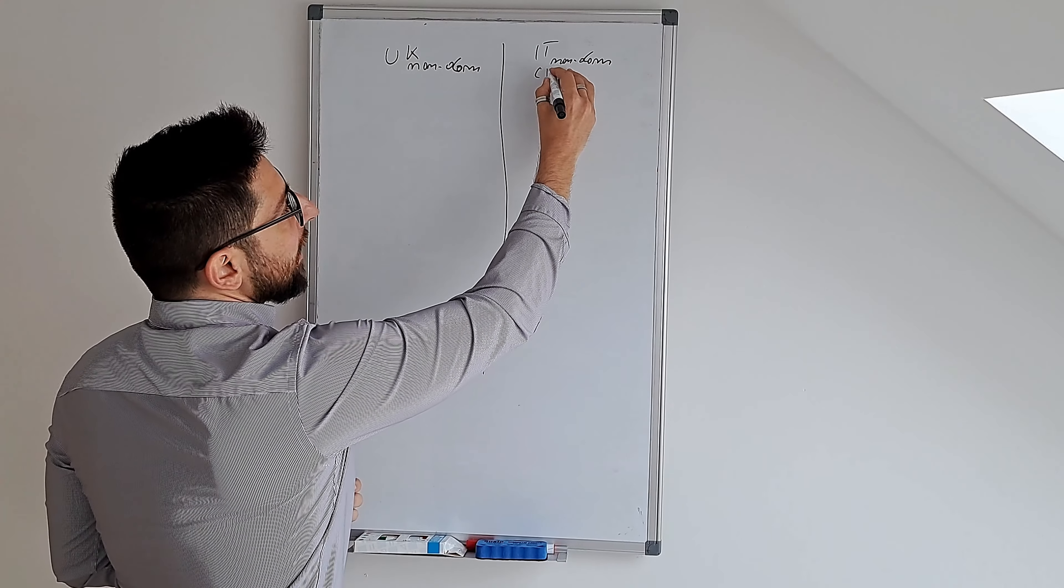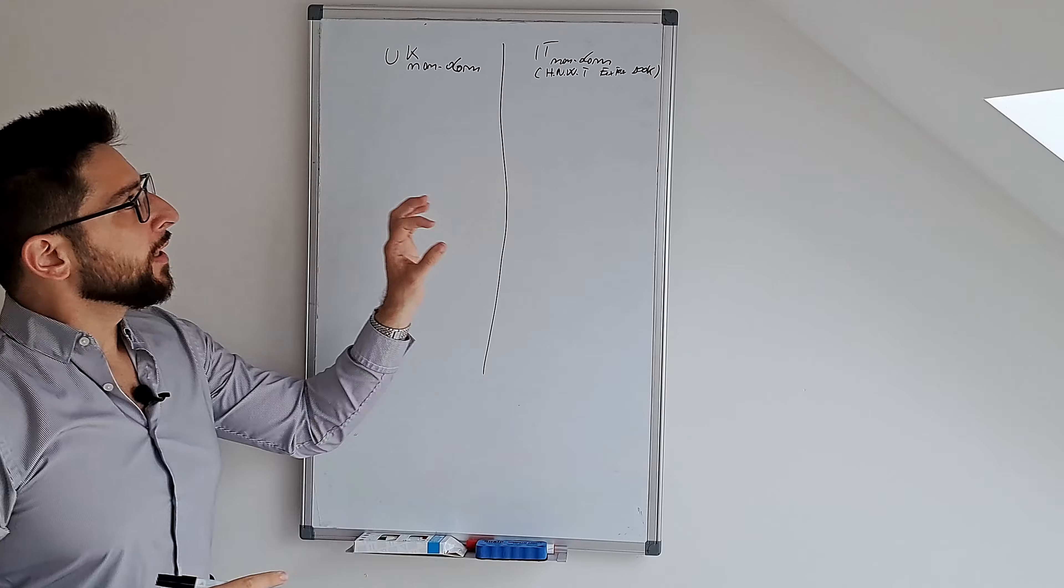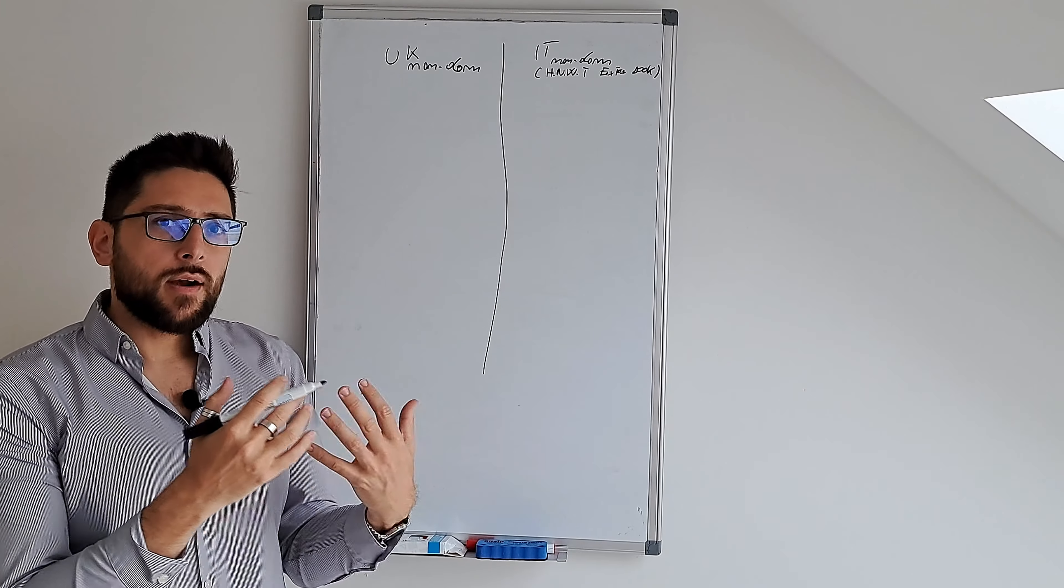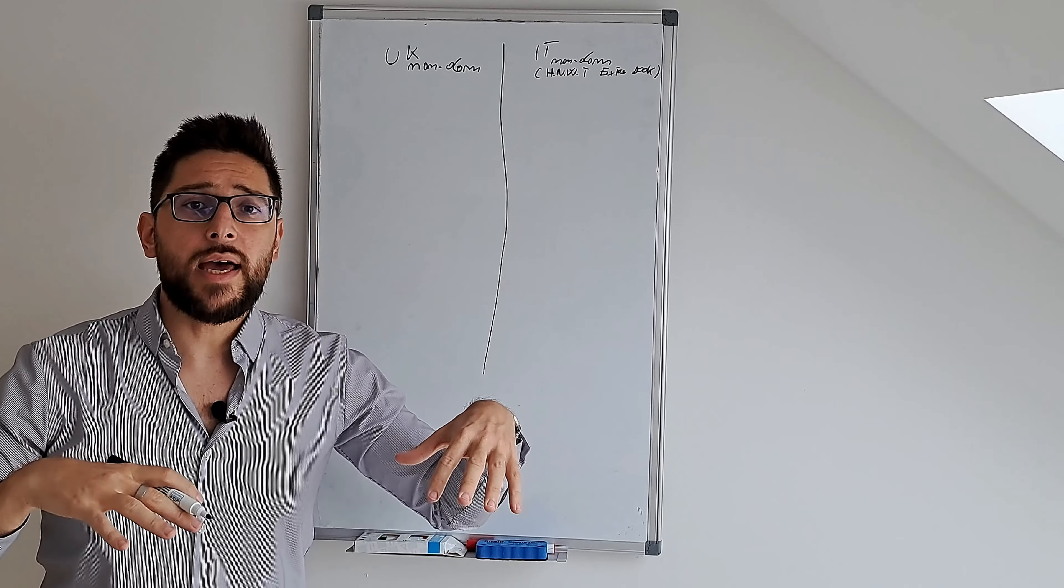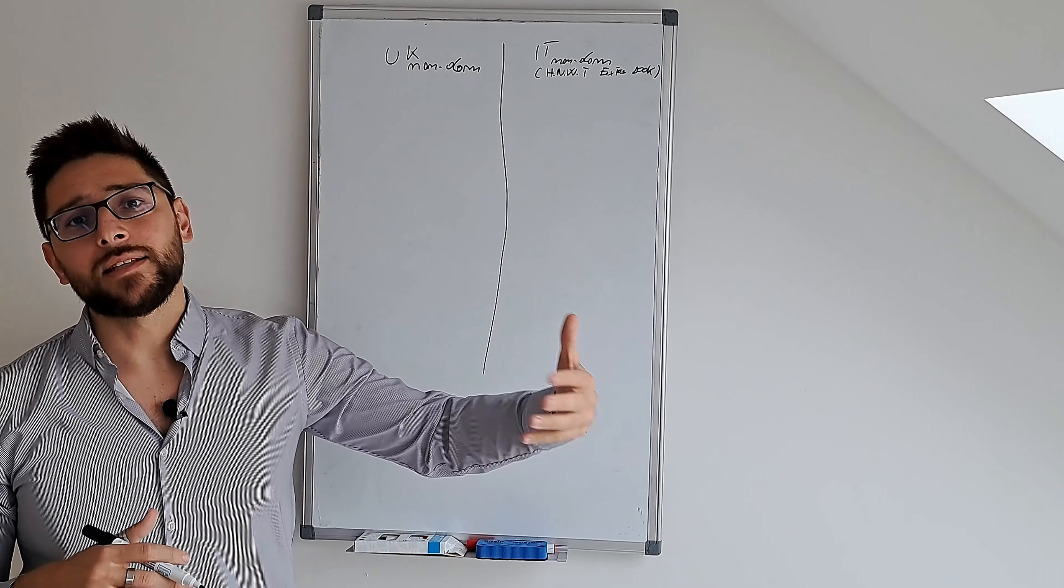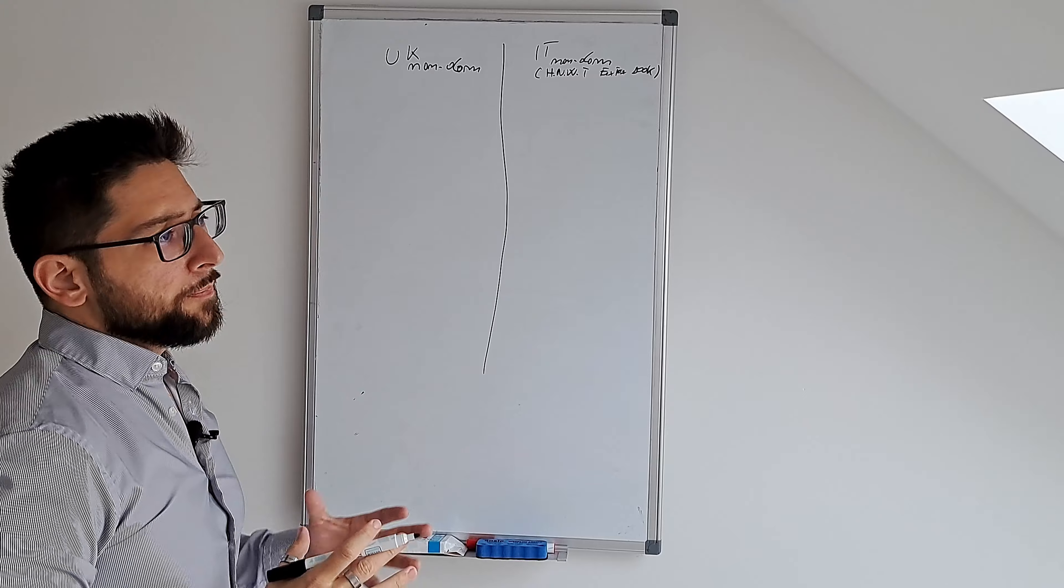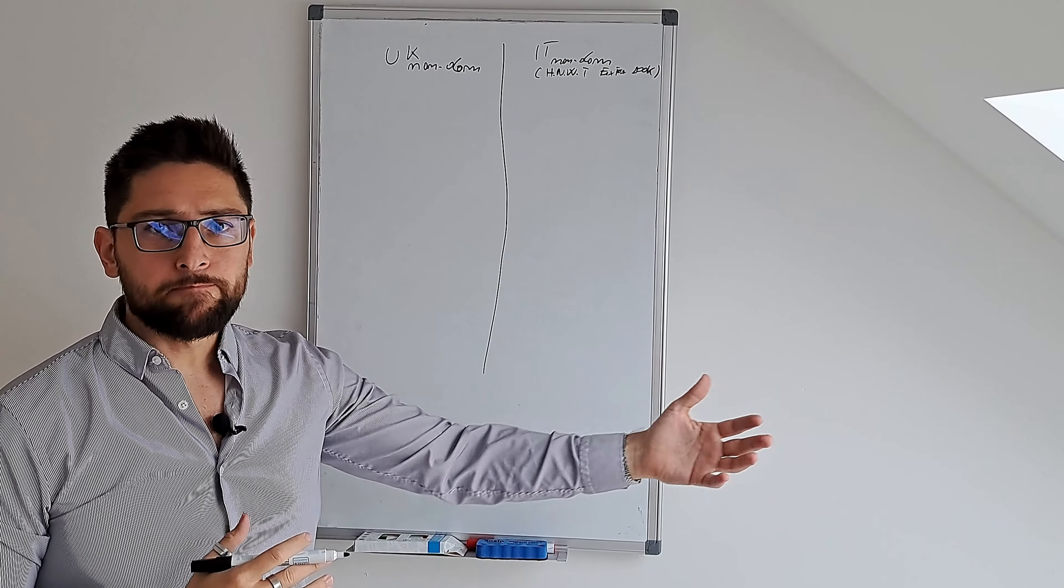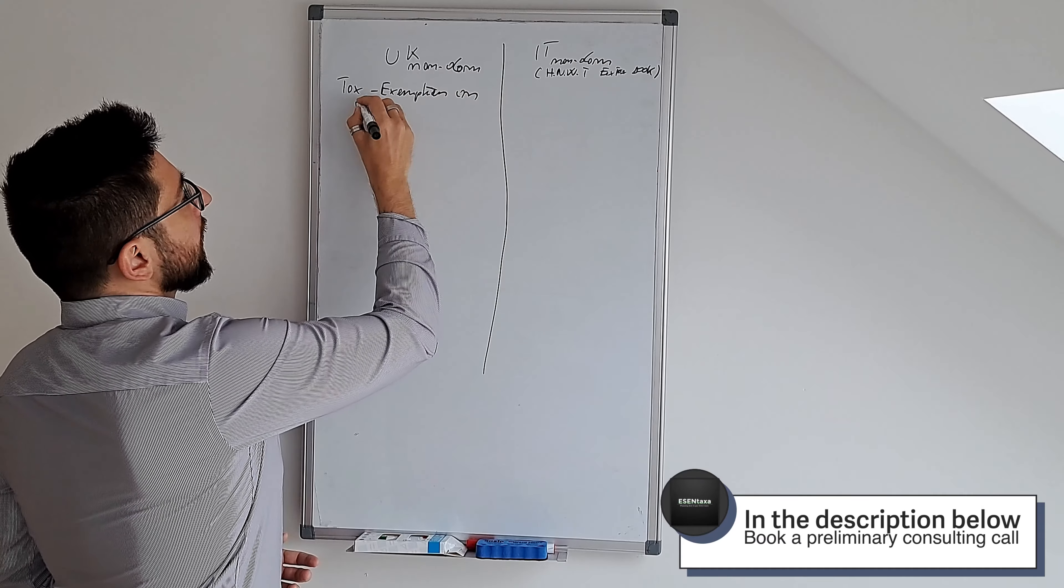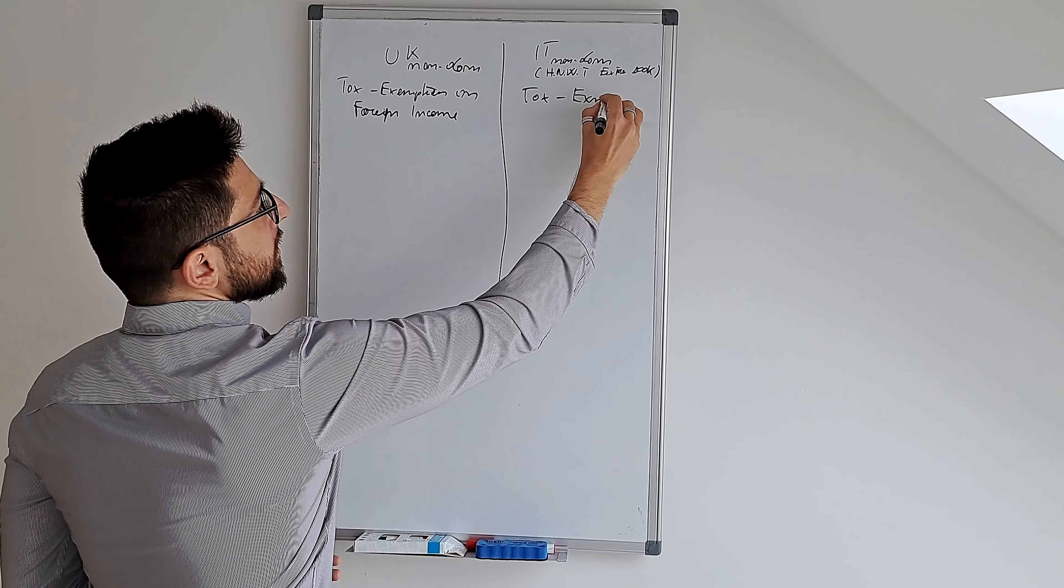This is also known as high net worth individual fixed tax 100K. Let's compare these two regimes. In UK, the non-dom still exists but will be abolished since 2025. Let's compare how the two regimes are right now and how UK residents can benefit from the Italian non-dom tax regime. The UK non-dom regime basically allows you to not pay ordinary UK taxes on your foreign income - tax exemption on foreign income. And this is exactly what the Italian non-dom tax regime allows you to do - exempt from taxes your foreign income.